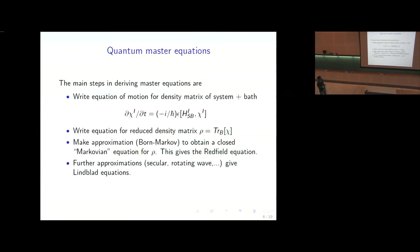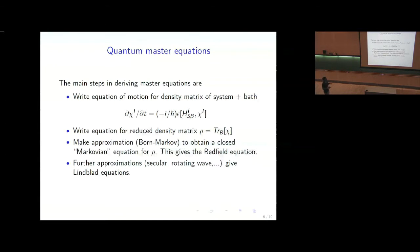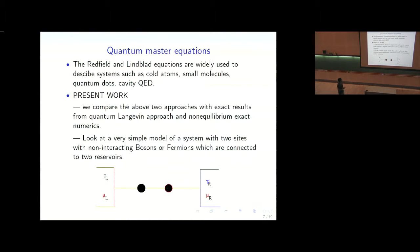When you perform the Born-Markov approximation, you get something called the Redfield equation. With further approximations, you get the Lindblad equation. The Lindblad equation has advantages — you can prove things like positivity — which is why people like it. The Redfield equation is more connected to the original equations, but positivity cannot be proven. The Redfield and Lindblad equations are widely used to describe systems such as cold atoms, small molecules, quantum dots, and cavity QED. The Lindblad description is more commonly used because it is simpler and because of the positivity property.